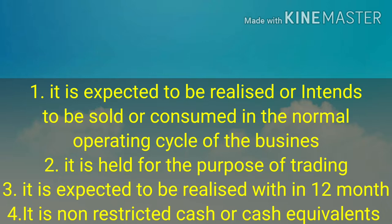The second condition: the asset is primarily held for the purpose of trading. Third, it is expected to be realized within 12 months after the reporting period. Fourth, it is non-restricted cash or cash equivalent. Restricted cash means an amount earmarked for some other purpose and not available for usual business use — that cash is not taken as a current asset.